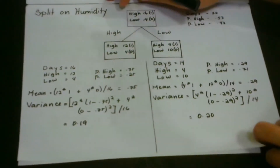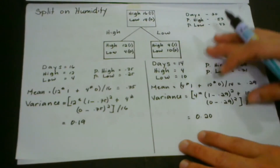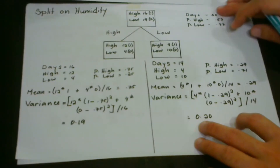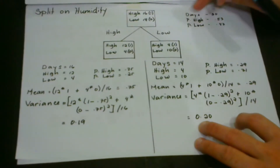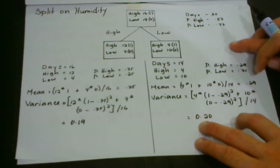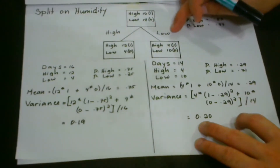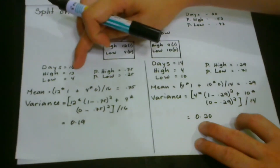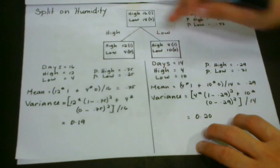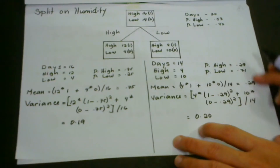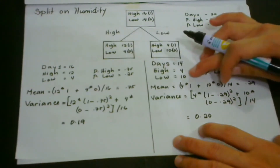Now let's go to the split on humidity. We still have 30 days: 16 are high humidity and 14 are low humidity. The probability of high humidity is 0.53 and low humidity is 0.47. In the high humidity child node with 16 days, 12 are hot and 4 are cold — probability of hot is 0.75, cold is 0.25. In the low humidity child node with 14 days, the probability of hot is 0.29 and cold is 0.71.